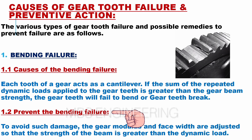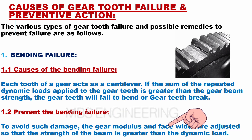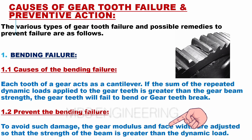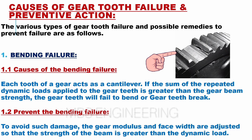To prevent gear tooth failure due to bending, the gear modulus and face width are adjusted so that the strength of the beam is greater than the dynamic load. Please refer to the gear tooth failure images for better understanding.